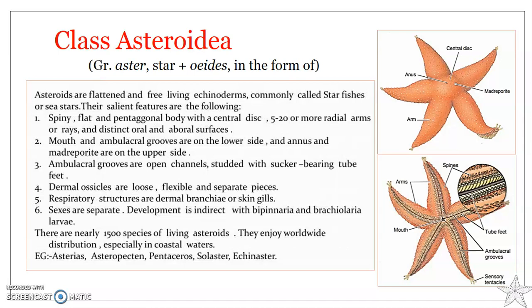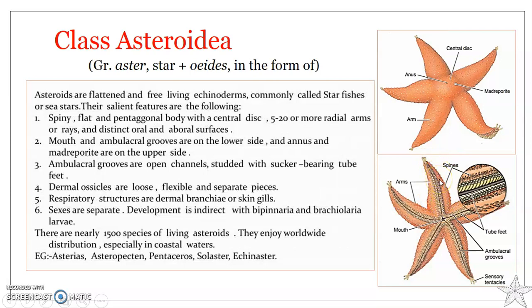Sea stars are flattened, free-living echinoderms commonly called starfishes or sea stars. A typical asteroid or sea star is composed of a central disc, which merges gradually with tapering arms. These arms are otherwise referred to as rays, because they are radial.